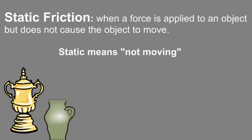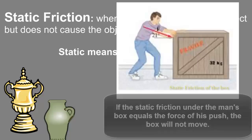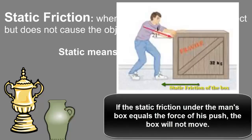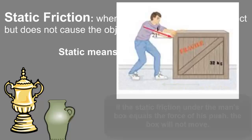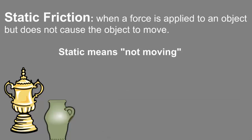Static friction can be overcome by applying a large enough force to move the object. But if you don't touch it, static friction keeps it staying where it is. Static friction is essential in life — otherwise we wouldn't be able to stand still, and structures wouldn't be able to remain still. Static friction will disappear as soon as an object starts moving; at that point it has kinetic friction.